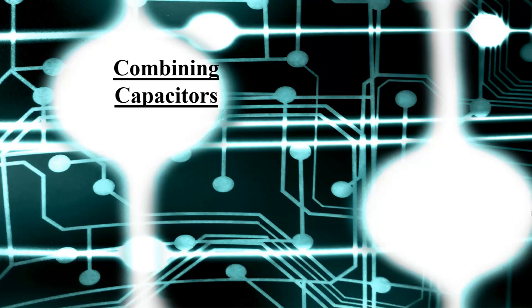Hello again, AP physics students. In today's lesson, we're going to look at capacitors — not so much what effect a capacitor has on a circuit just yet, but we're going to look at circuits that have multiple capacitors and try to find a way to combine capacitors that are either in series or in parallel into a single capacitor, much like what we were doing with resistors in series and in parallel to find an equivalent resistance. In future lessons, we'll look at what effect a capacitor has in a more complicated electric circuit.